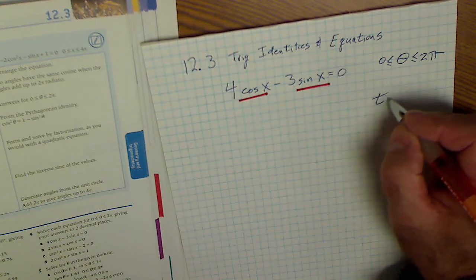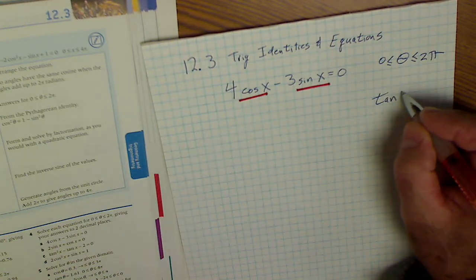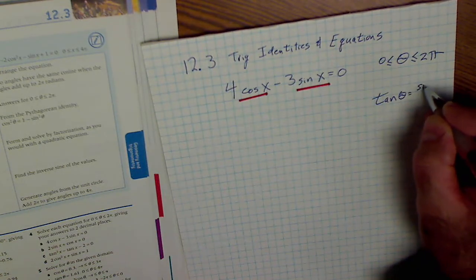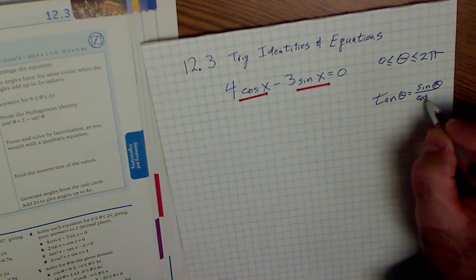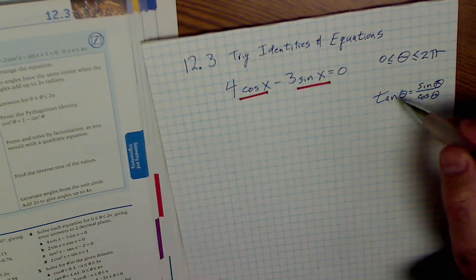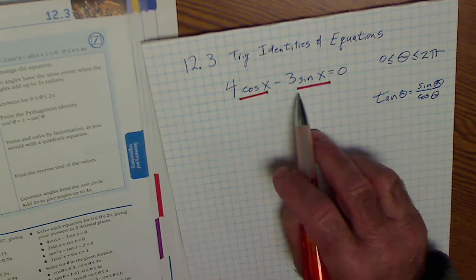And one of those identities is that tangent of any angle is equal to sine of any angle over cosine of that same angle. So tangent equals sine over cosine. I'm going to use that here.